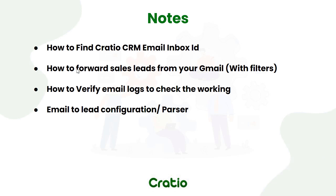Once you have copied the inbox ID, let's say you get emails from some landing pages. Whenever a customer submits a lead on your landing page, an email alert is triggered and it comes to your company's Gmail ID. So you need to write a forwarding rule so that this particular lead email alone gets forwarded to Cratio's inbox, and we will see how the lead gets created.